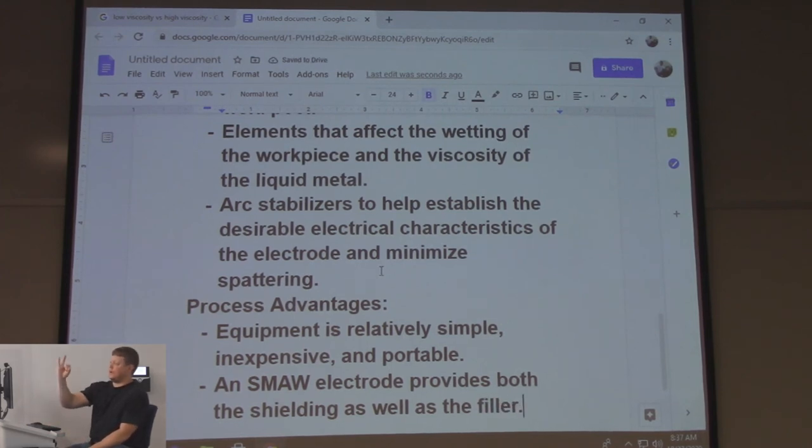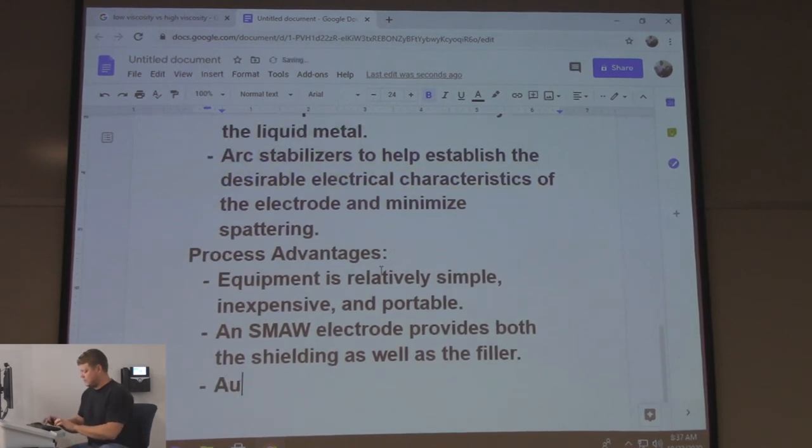A SMAW electrode provides both the shielding as well as the filler. To do that job, I had a rubber band of electrodes this big that I took out of there, stuck in my pocket. Pretty simple, right? If you're thinking about a MIG, you've got to take the filler metal. The filler metal's not the problem. It's the gas. You've got to lug a bottle around.